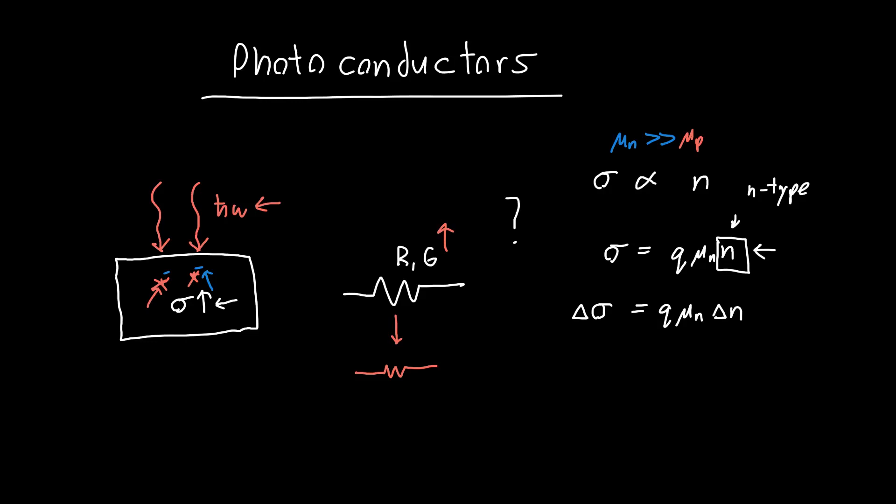If we increase the charge carrier density by a certain amount, we're going to increase the conductivity by a certain amount as given by this equation. This is the basic idea of what's going on inside a photoconductor.